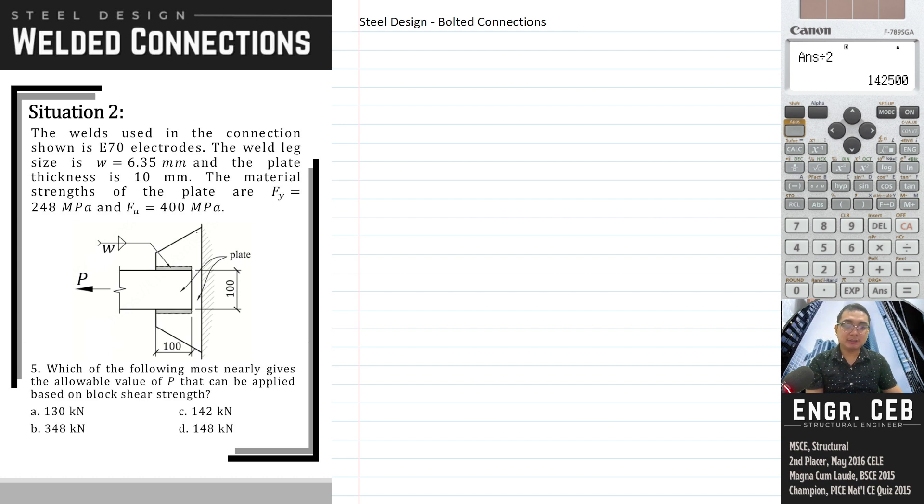Which of the following is the allowable value of P that can be applied based on block shear strength? The block shear strength is in the gusset. So when you pull the plate, there's possible failure in the gusset plate. This is the shape of the block shear. This is the shear area, and then the tension area is here. So let's compute the areas.